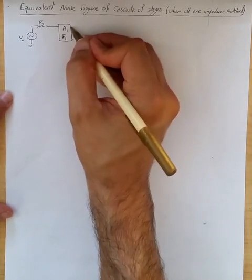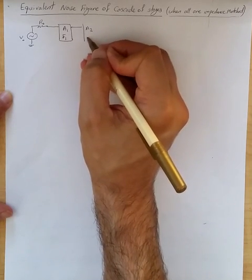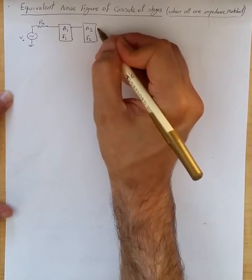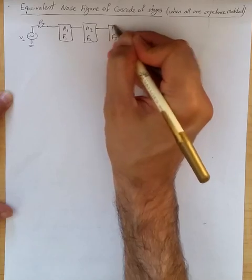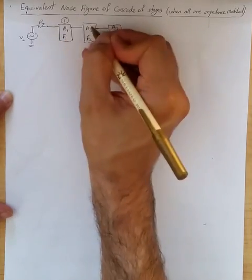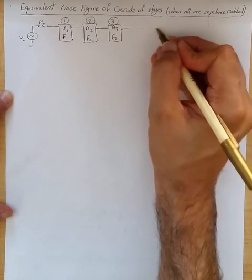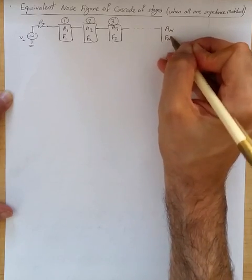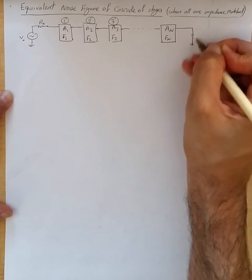Consider its noise factor. And then we have stage 2 with voltage gain of A2 and noise factor F2, and A3 F3 for stage 3. So this is stage 1, stage 2, and stage 3. And this continues for stage N with voltage gain AN and noise factor FN. And then we have the final load, RL.